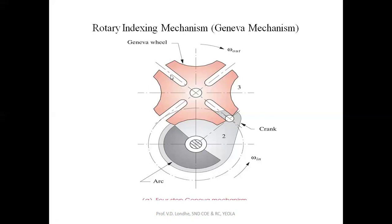For the Geneva wheel, slots are provided. For one rotation of the crank, the pin inserts into one slot, then the wheel remains stationary until the next slot is engaged. This Geneva mechanism acts like a cam mechanism providing intermediate rotary motion. The application of the Geneva mechanism is used for indexing of a work table in both low and high speed machinery.